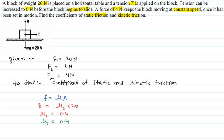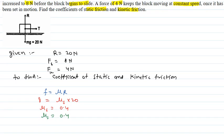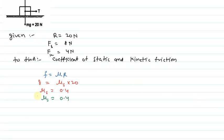Now we use this equation for kinetic friction. Here, 4 is equal to mu k into 20. Then mu k is equal to 0.2. So the coefficient of kinetic friction mu k is equal to 0.2. That is the explanation for this question.